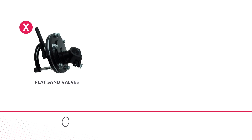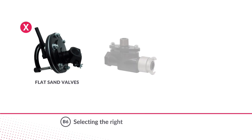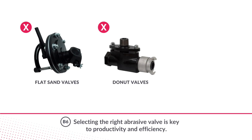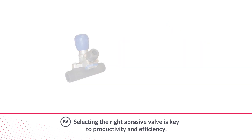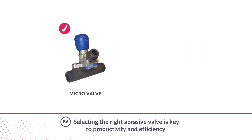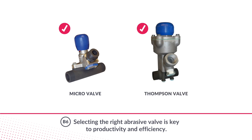The old flat sand valves, donut valves, and ball valves do not provide precise adjustments to control the abrasive flow. The use of a micro valve or Thompson valve will facilitate more accurate abrasive metering, resulting in reduced consumption, improved productivity, and higher efficiency.